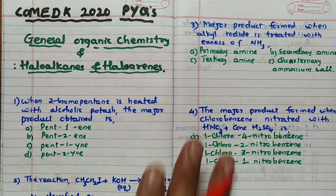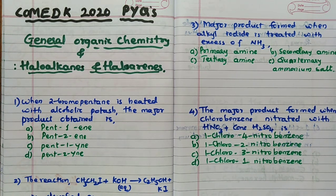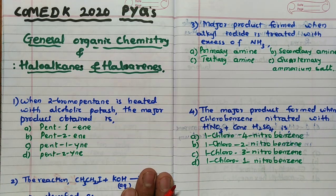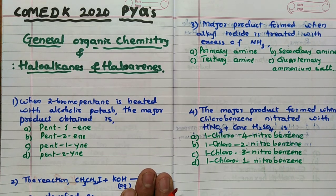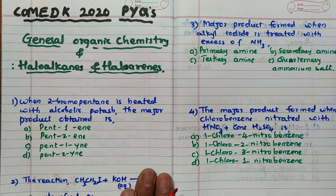The syllabus of COMETK and CET is almost 100% the same — all class 11 and class 12 syllabus. Some websites give the misconception that only some chapters are there for COMETK; that is fake news. Go to the official COMETK website and check — it clearly states class 11 and class 12. I have already finished almost six chapters covering previous year questions.